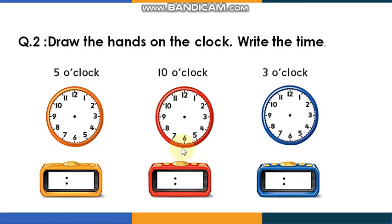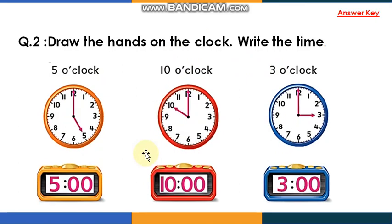Let's check the answers: five o'clock, five o'clock, ten o'clock, and three o'clock. Remember — the long hand always moves from number 12 and goes all around the clock to make one hour.